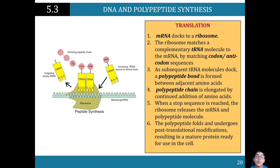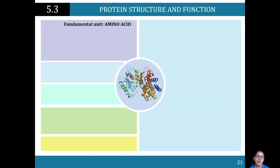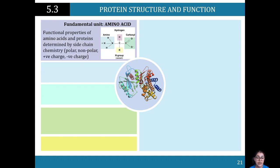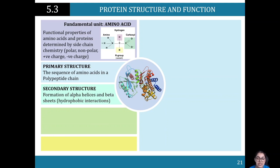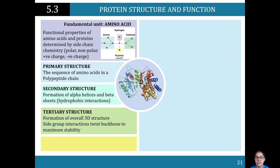The fundamental unit of a protein is amino acids — they are the functional units and have various side chains. The primary structure is the sequence of amino acids in a polypeptide chain. The secondary structure involves the formation of alpha helices and beta sheets. The tertiary structure is the overall 3D structure formed by side group interactions between amino acids for maximum stability. The quaternary structure is when multiple protein subunits interact with one another.